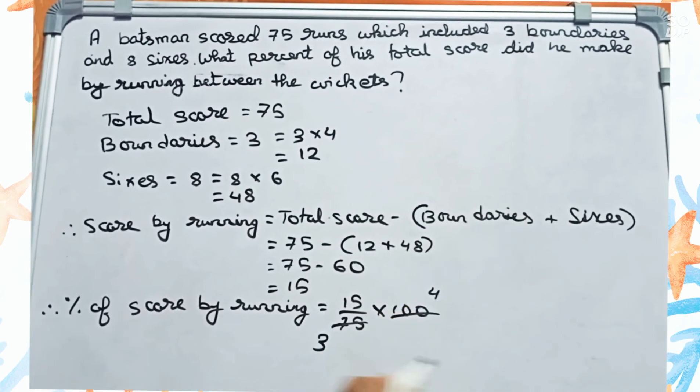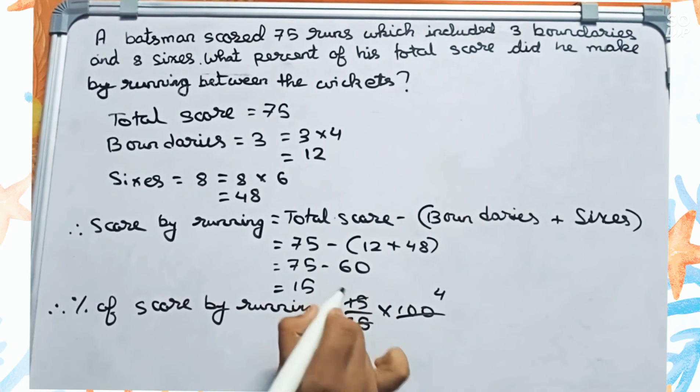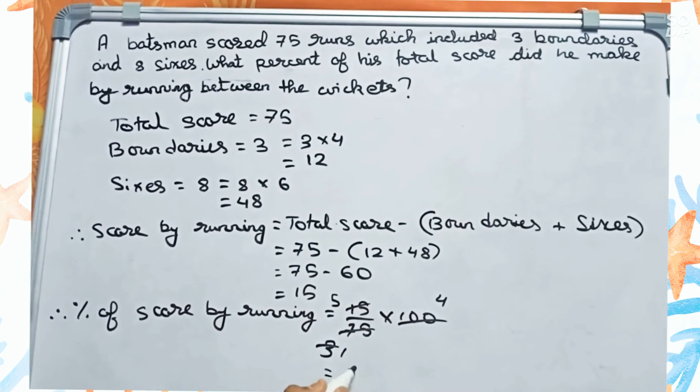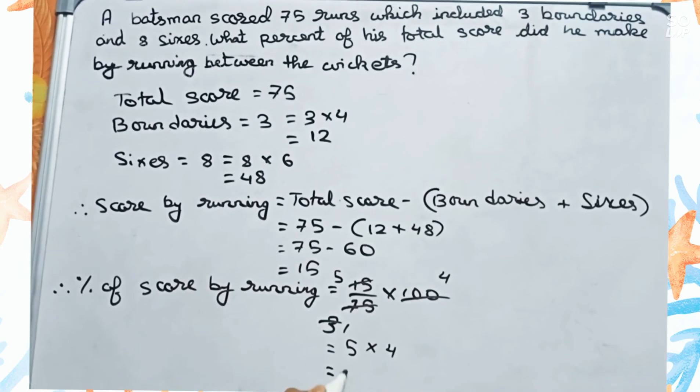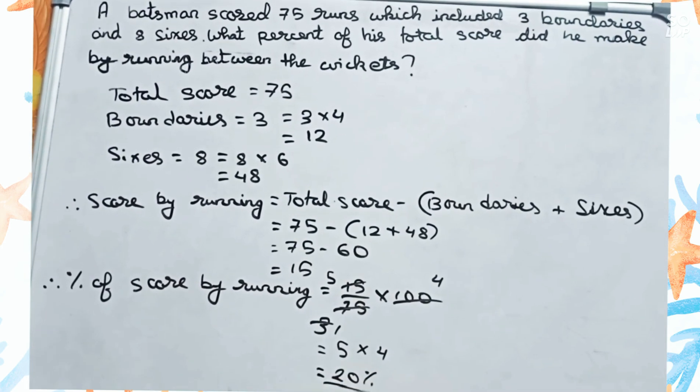Now 15 divided by 3 equals 5, so it's 5 into 4, which equals 20 percent. This is our final answer.